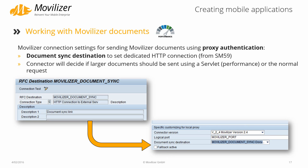A further performance improvement is that you can define an own HTTP connection for sending out Movilizer documents. This increases the performance over the web service based sending if you have large documents. The connector will decide based on the size of the document whether to send it over the web service interface or over the document connection.